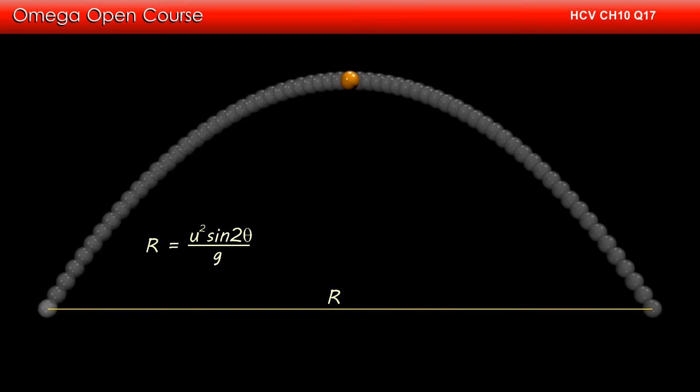The mass of the particle is m, so its weight, i.e. gravitational force, is mg. Let us draw the line of action of this force. When the ball is at the highest point, it is exactly at the middle point of its trajectory. So, the line of action of gravitational force on the particle must be at distance R by 2 from the point of projection.